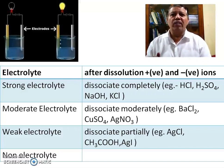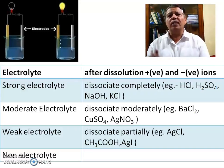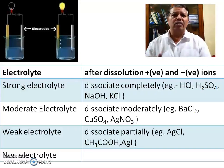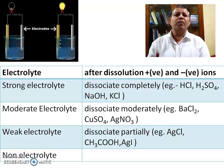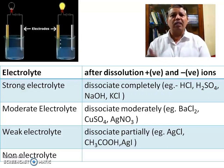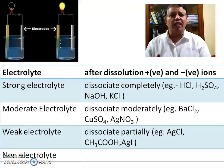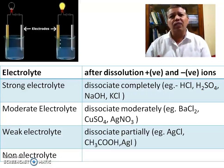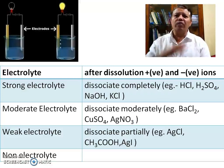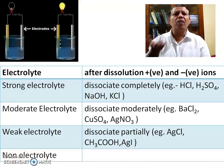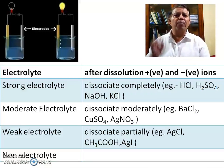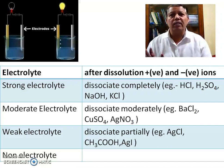Some electrolytes like copper sulfate, silver nitrate, and barium chloride moderately dissociate, and therefore these are called moderate electrolytes. Compounds like silver chloride, acetic acid, and silver iodide, when dissolved in water, only a very small amount gets ionized — they very partially dissociate — and these are called weak electrolytes.